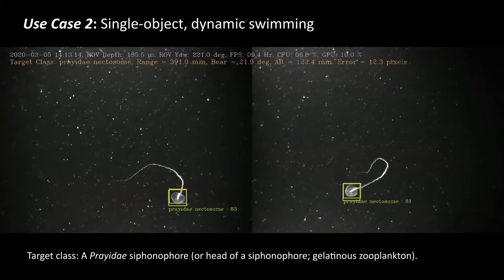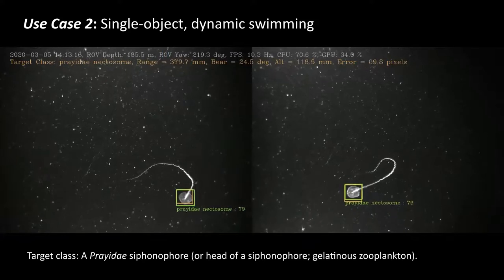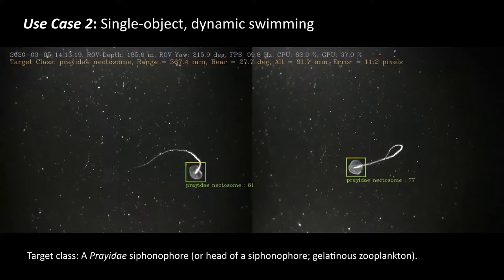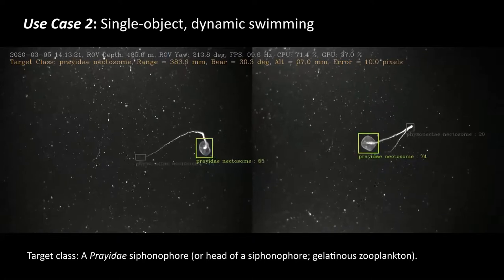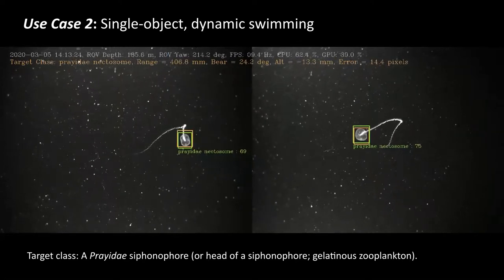For use case two, a single object that is dynamically swimming, the target class here is the head of a siphonophore called Praeidae, which is another translucent gelatinous animal.